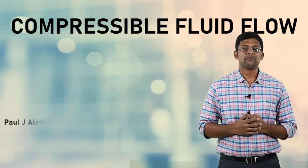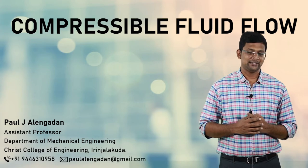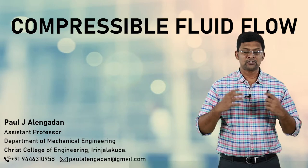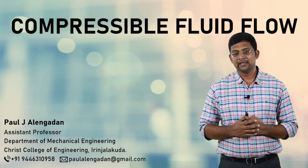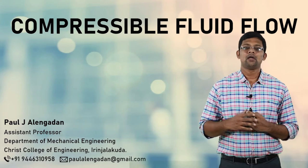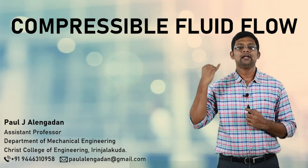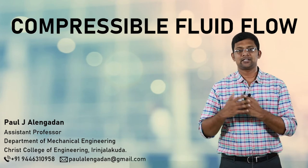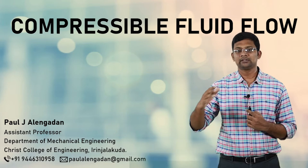Before moving on, let us quickly revise what we learned in our last video. I started my discussion in the last video with the definition of Mach number. Mach number M is defined as the ratio of flow velocity C to the sonic velocity A in that medium. We know the sonic velocity or velocity of sound A is equal to root of gamma R T, and hence Mach number M is equal to C divided by root of gamma R T. Then we derived the adiabatic energy equation for the first law of thermodynamics. We then discussed the concept of stagnation conditions — stagnation enthalpy, stagnation pressure, stagnation temperature, stagnation density, and stagnation velocity of sound — and derived the expressions for all these stagnation conditions.